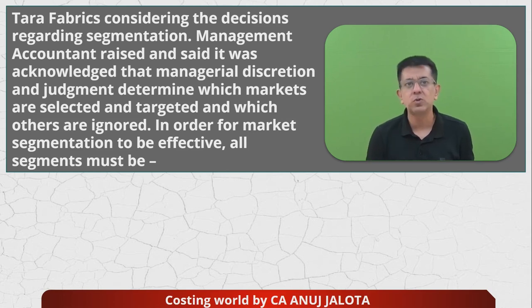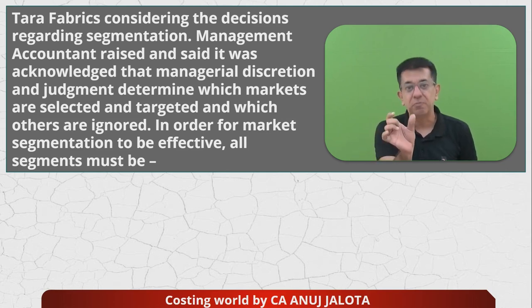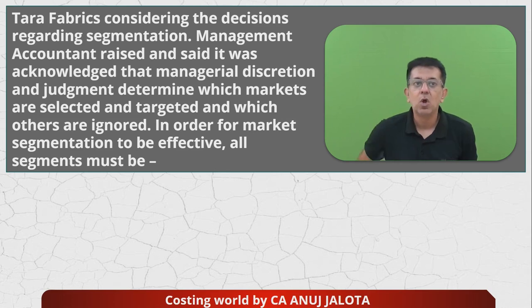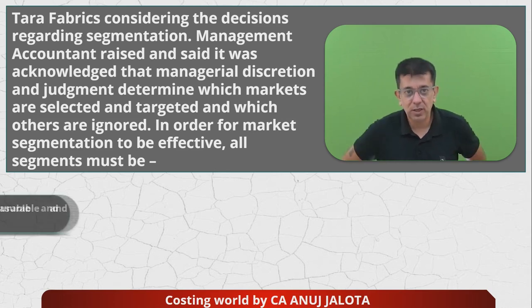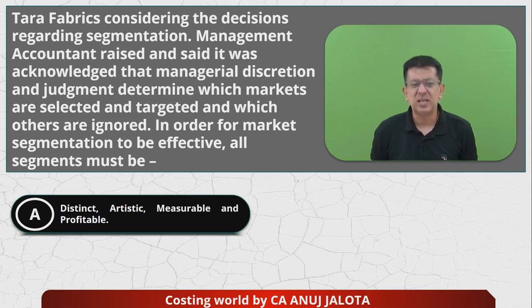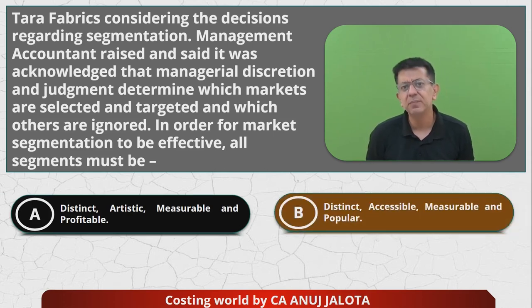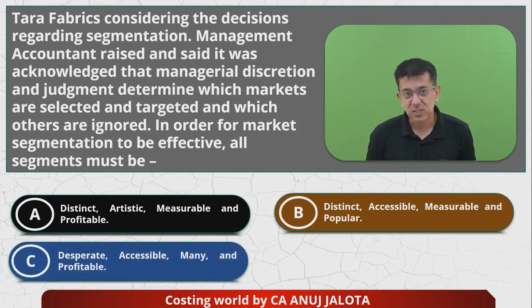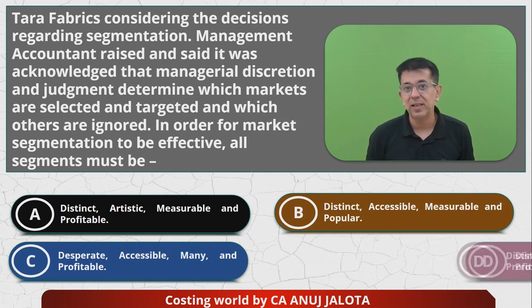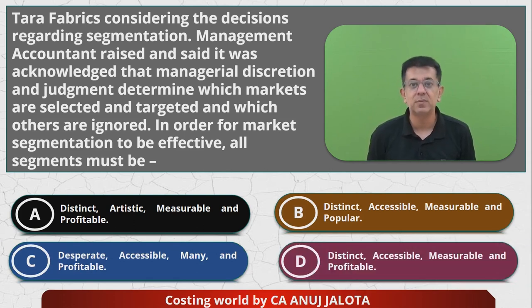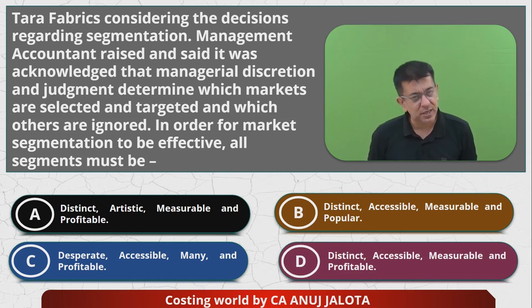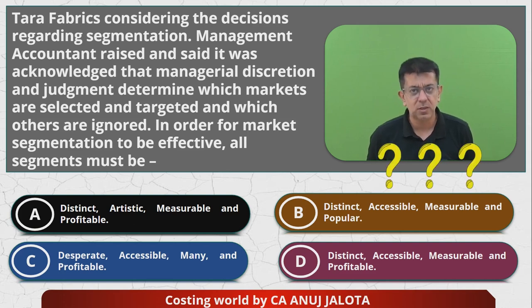So for market segmentation to be effective, the definition of the market has to be good. The four options are: A - distinct, artistic, measurable, and profitable; B - distinct, accessible, measurable, and popular; C - desperate, accessible, many, and profitable; and D - distinct, accessible, measurable, and profitable. If you already know the answer, this is the time to comment below.